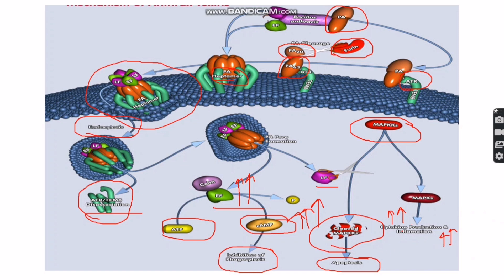The overproduction of cytokines — including TNF-alpha and IL-1beta — leads to lysis of macrophages. The release of these inflammatory mediators also contributes to the sudden death that is characteristic of anthrax. Lethal factor is a zinc-dependent metalloprotease enzyme, and MAPKK stands for mitogen-activated protein kinase kinase. Edema factor is a calmodulin-dependent adenylate cyclase enzyme.